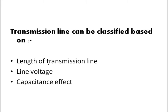The transmission line can be classified based upon three factors: the length of transmission line, the line voltage, and the capacitance effect. There will be three types of transmission line — first one is short transmission line, then medium transmission line, and long transmission line.